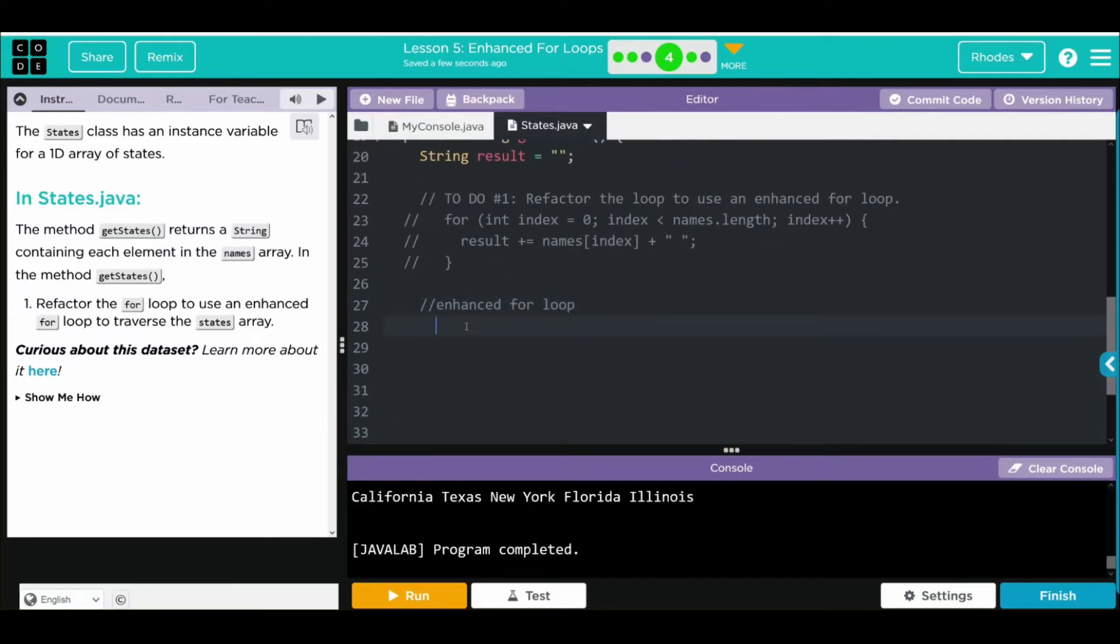We still need our for keyword, still have our parentheses, still have our curly cues. What do we need in our parentheses? Think how for loop works. We're looking through each element at a particular index in an enhanced for loop. We're looking through all elements. We don't care about the index. In a for loop, we had to create an index to look through. Here, we're going to create a variable to store the information in each index.